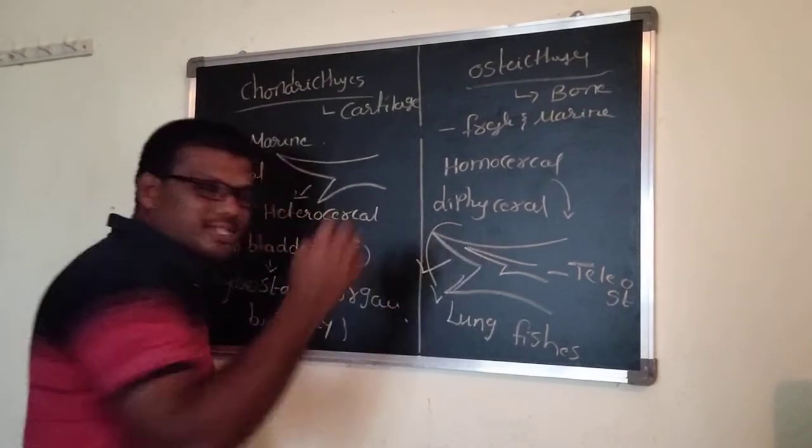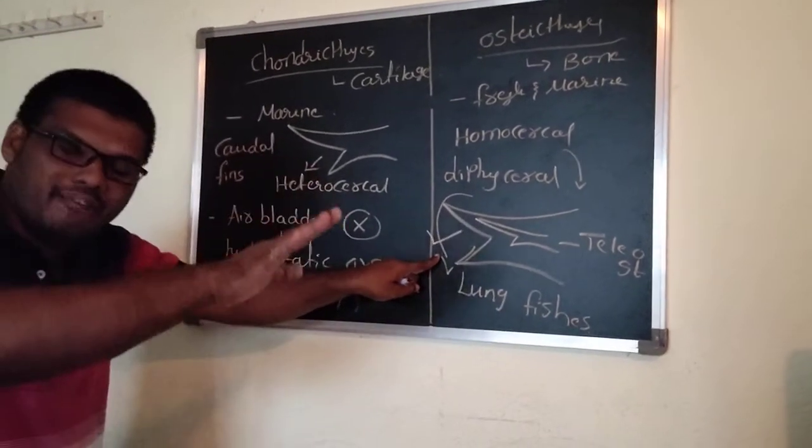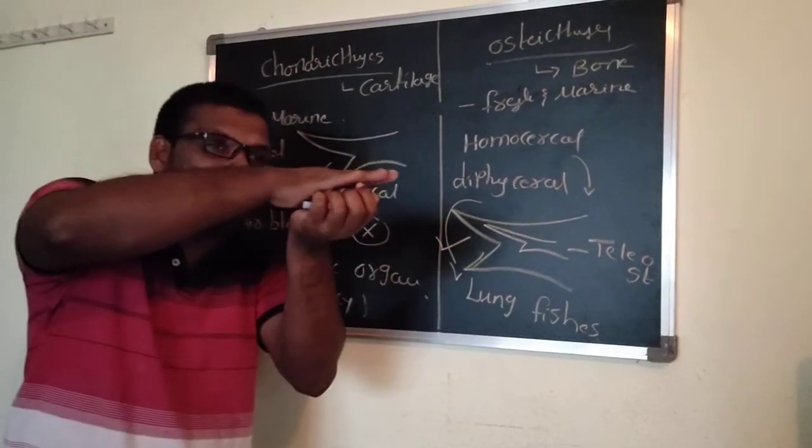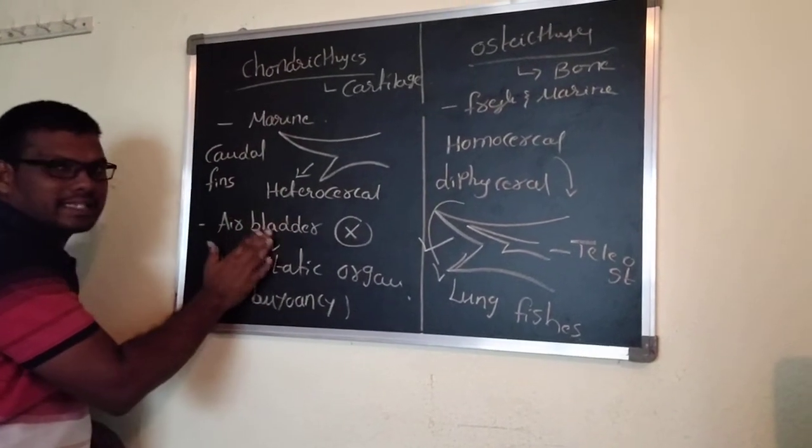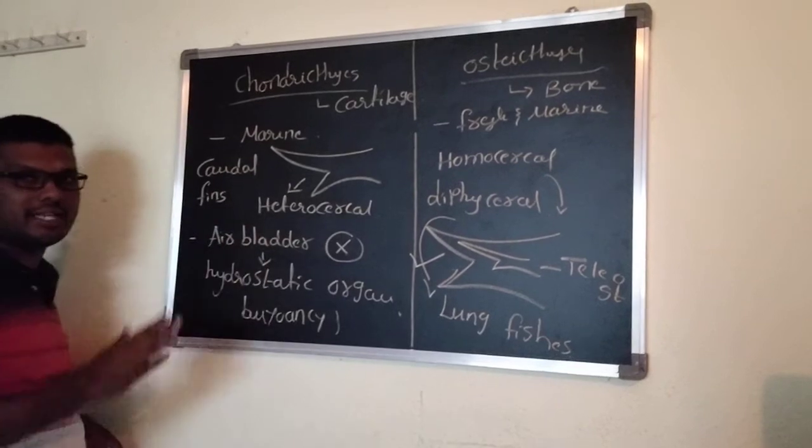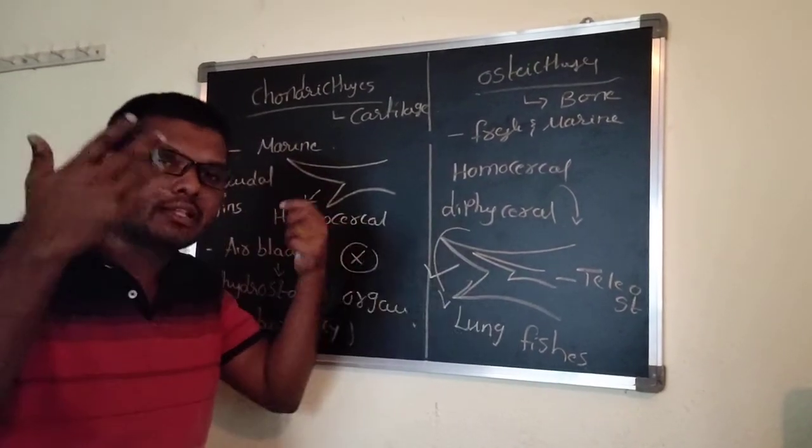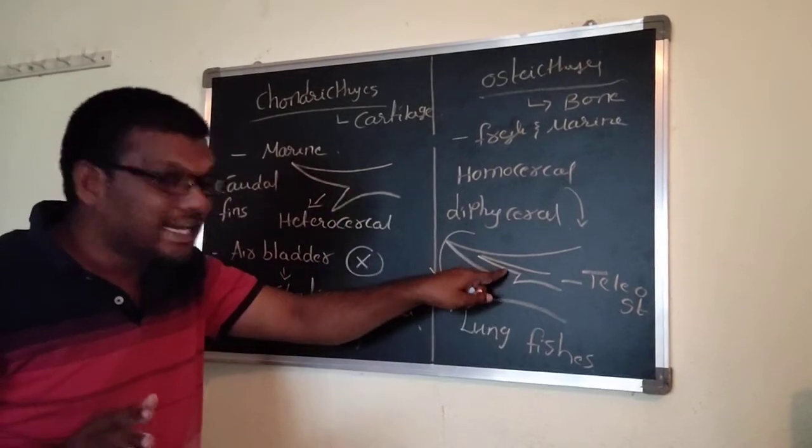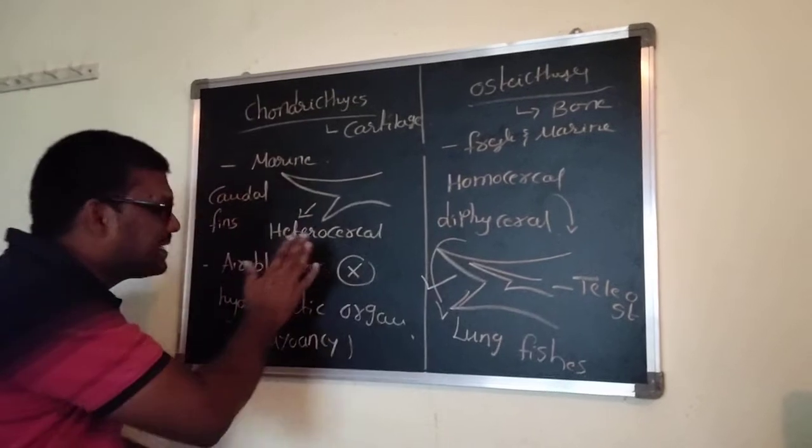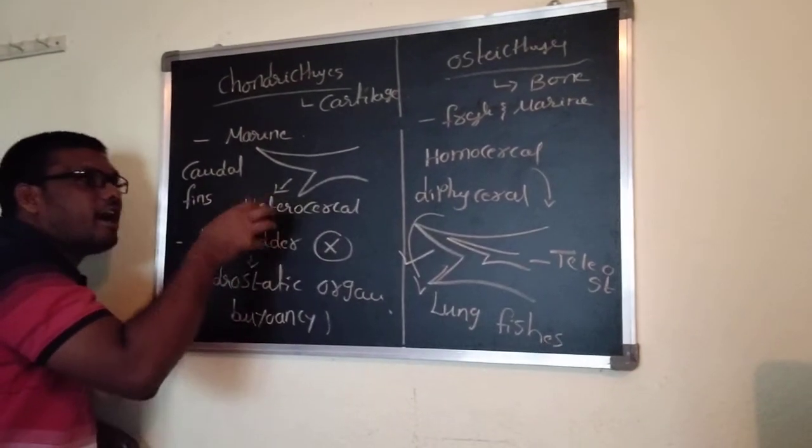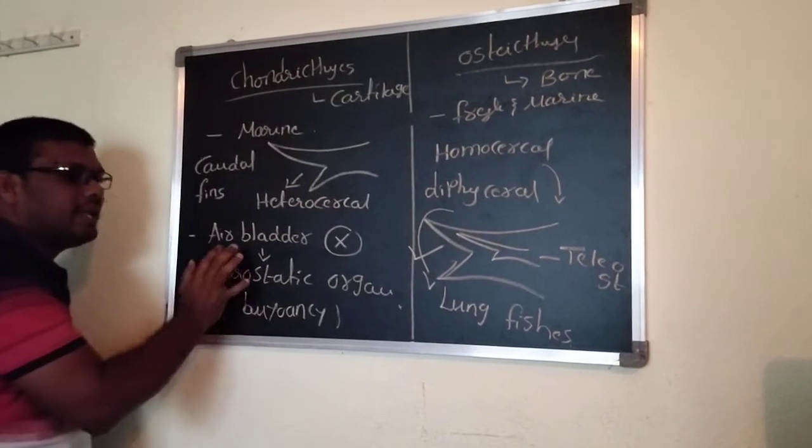If you observe Osteichthyes, they have an air bladder present. That's why bony fishes normally can float on the water. But cartilaginous fishes are not able to float on the water. Although they can swim in the water, they can take rest on the bottom sometime. But this type of facility is absent in Chondrichthyes due to the absence of the air bladder.